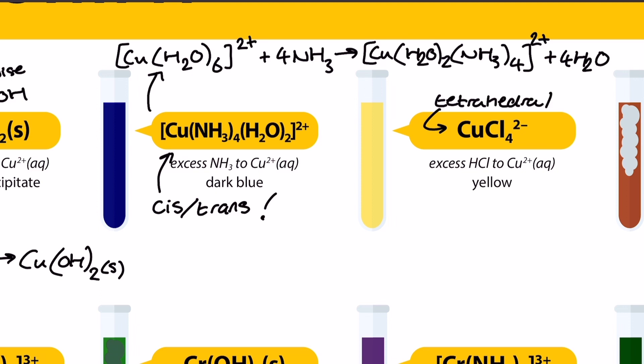Moving on, we have another complex ion to show a ligand substitution reaction for, and it's CuCl4-2. Using excess HCl added to the hexa-aqua-copper-2 complex ion, we can form this yellow complex ion, which is actually tetrahedral in shape. A common misconception here is that you need to show the full HCl in the reaction equation, but as you can see here, it's much more efficient just to use 4Cl- instead.